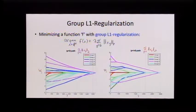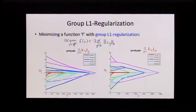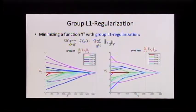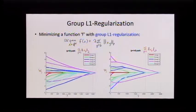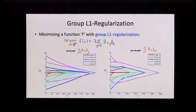Where the groups become zero depends on the gradient of this term with respect to the group. If you have more elements in the group, you'll need a bigger lambda to set it to non-zero because the gradient has more elements. So people often put a lambda_g inside here so you have a different lambda for each group — for big groups you use a bigger lambda value to compensate for that effect.